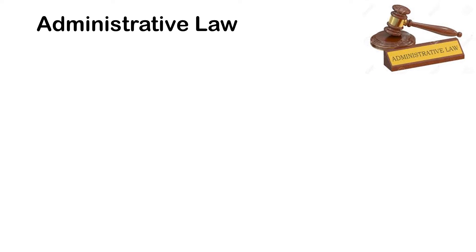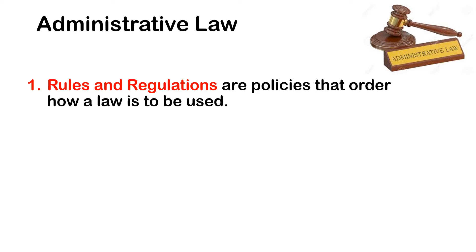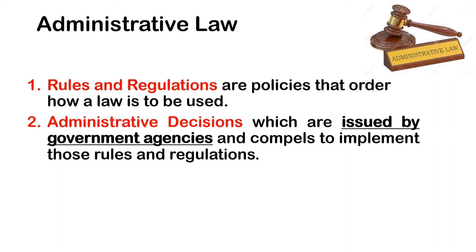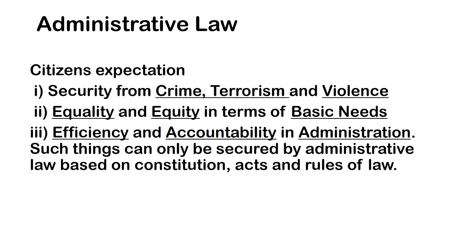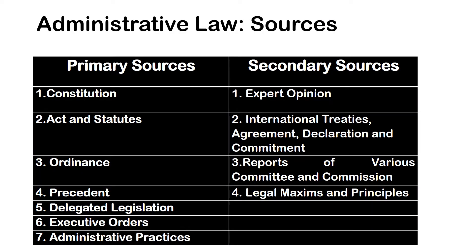Generally speaking, there are two types of administrative law: rules and regulations, which are policies that order how a law is to be used, and administrative decisions, which are issued by government agencies and compel implementation of those rules and regulations. Citizens generally expect three things: security from crime, terrorism and violence; equality and equity in terms of basic needs; and efficiency and accountability in administration. Such things can only be secured by administrative law based on constitution, acts, and rules of law.